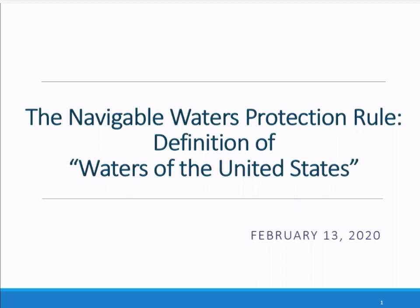The EPA and the Department of the Army have implemented the President's Executive Order in two steps. In Step 1, the agencies repealed the 2015 WOTUS rule and recodified the regulations that were in place prior to the issuance of the 2015 rule. The Step 1 rule became effective on December 23, 2019. Step 2 is the Navigable Waters Protection Rule. On January 23, 2020, the agencies finalized this revised definition of Waters of the United States.